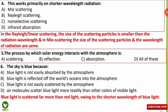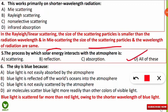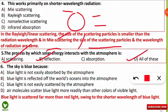The fifth question is: the process by which solar energy interacts with the atmosphere is what? The correct option is D — all of the above. Solar energy coming from the sun experiences scattering, reflection, and absorption by gases such as greenhouse gases. All these processes describe how solar energy interacts with the atmosphere.